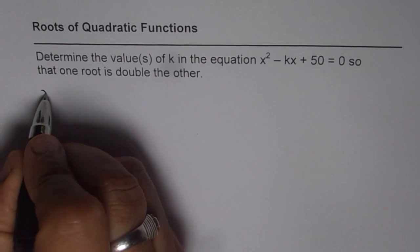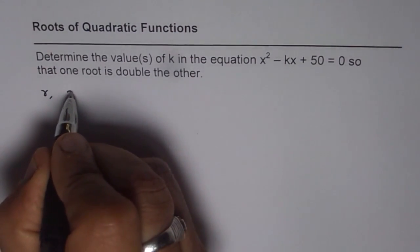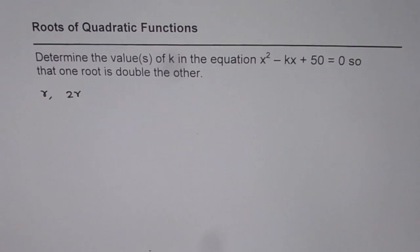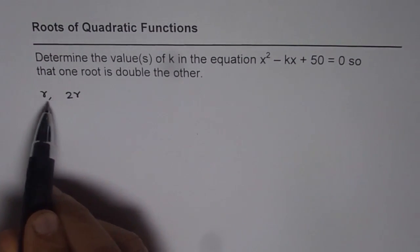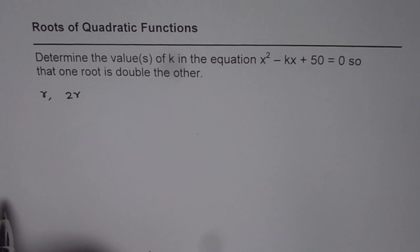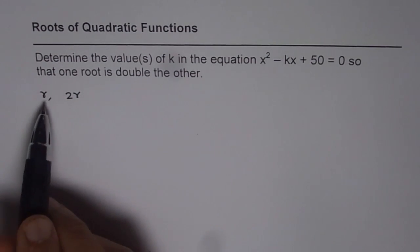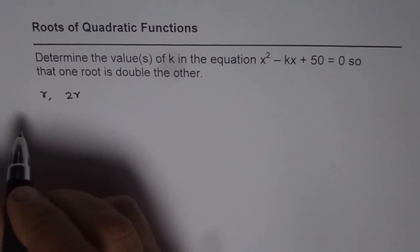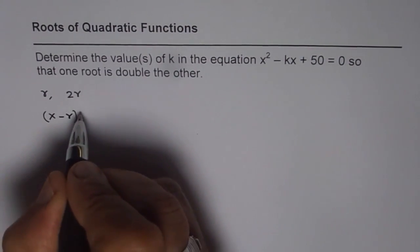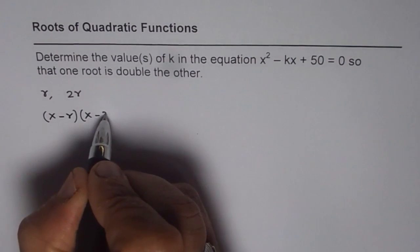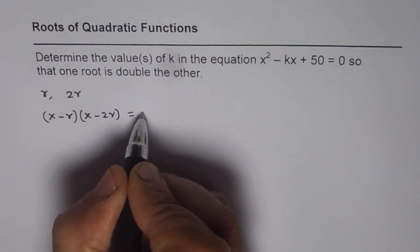Let us say one root is r and then the second root will be 2 times r. Now, if these are the roots of the quadratic equation, then what should be the equation? The equation should be (x - r)(x - 2r) = 0.